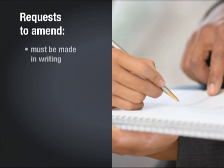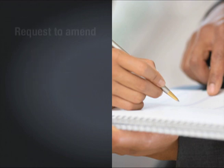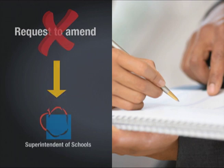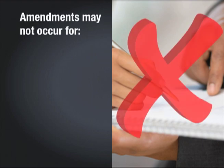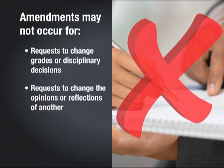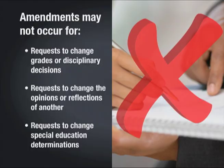Requests to amend a student record are made in writing to the building administrator. If your request for amendment is not granted, you may appeal the decision to the superintendent of schools. Amendment may not occur for requests to change grades or disciplinary decisions, to change the opinions or reflections of a school official or other person, or to change special education determinations.